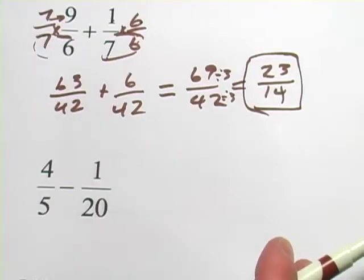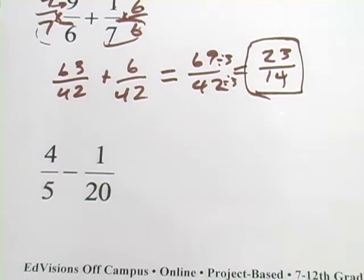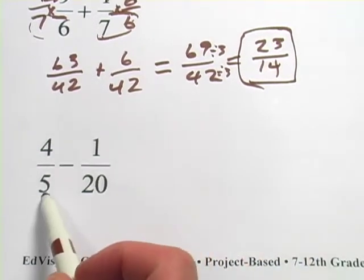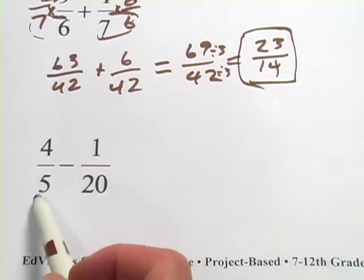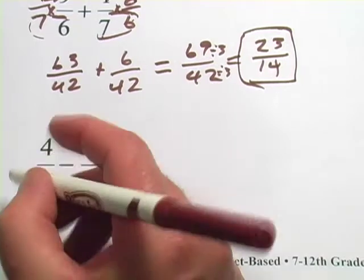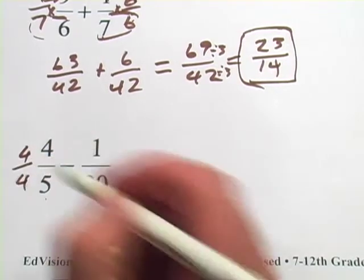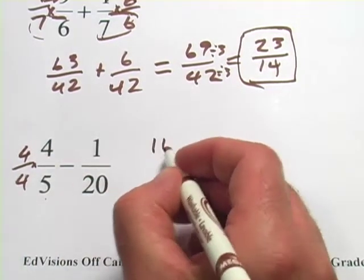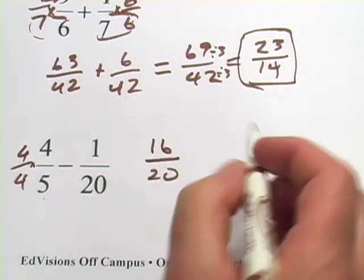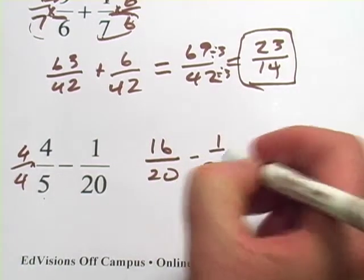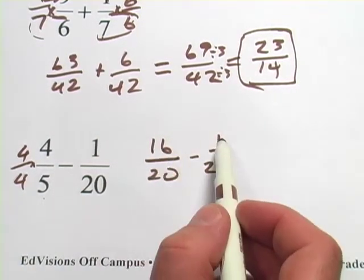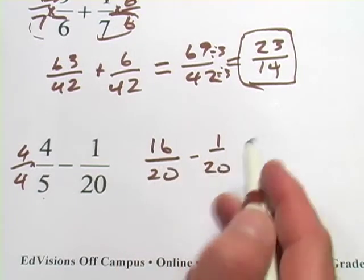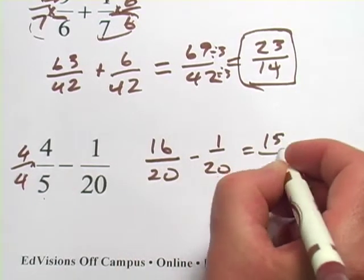Alright, we're going to do one more here, a subtraction problem. This one I think is a little bit easier because I know I can get to 20 down here if I multiply by 4. So the version of 1 I'm going to multiply by is 4 over 4. On the top we get 16 over 4 times 5 is 20. And now we have minus 1 20th. So 16 minus 1, here's step 2. 16 minus 1 is 15 over 20.